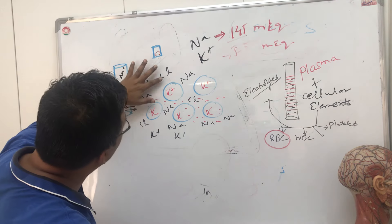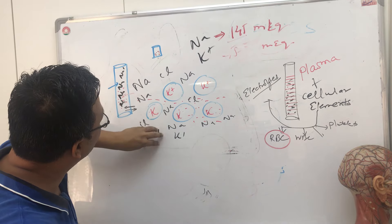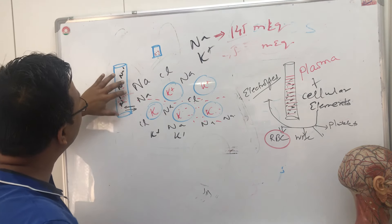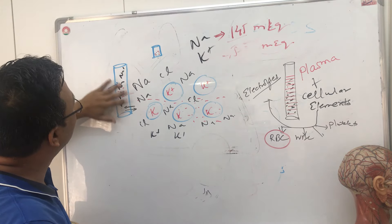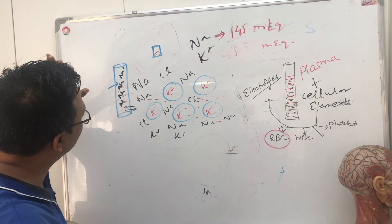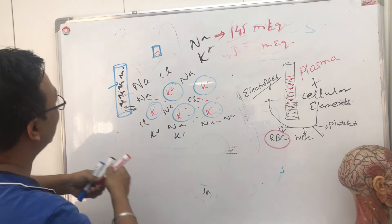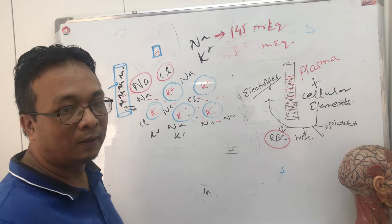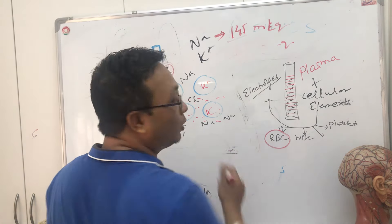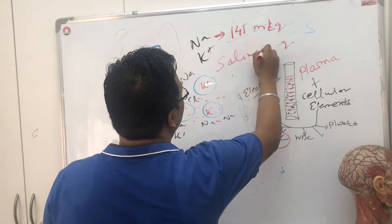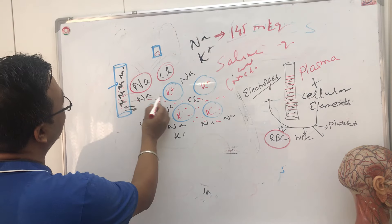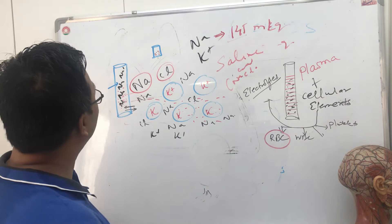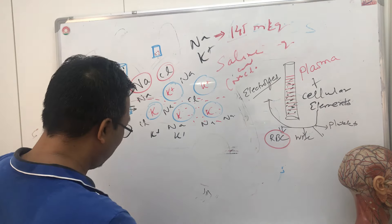Sodium, potassium, and chloride are called electrolytes. When someone loses fluid through sweat or an accident — losing blood — they don't only lose water, they also lose sodium and chloride. That's why when you become a nurse, you don't give plain water — you give saline water, which is sodium chloride, to refill the fluid and electrolyte deficit.